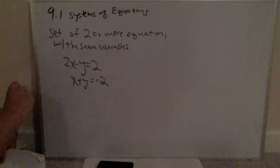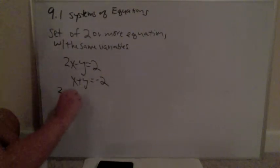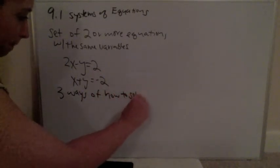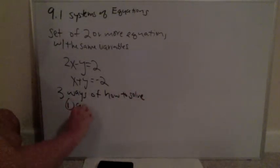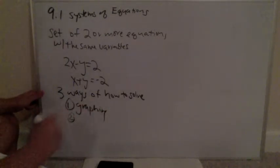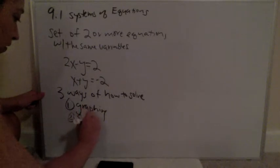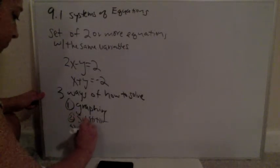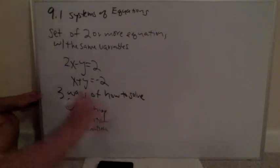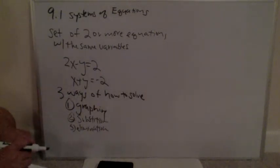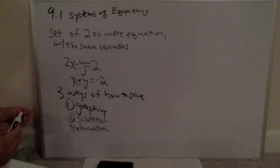There are three ways to solve a system of equations. The first way is graphing. The second way is substitution. And the third way is elimination. There are also three ways the answer can come out, and it's easiest to see those three ways when you look at the graphs. So we'll start with graphing.